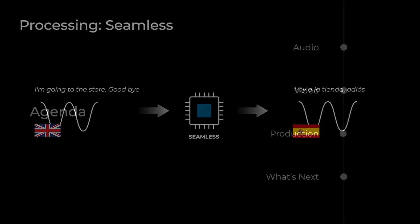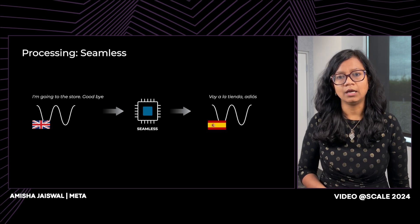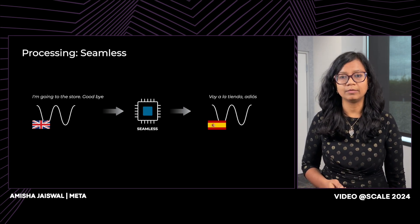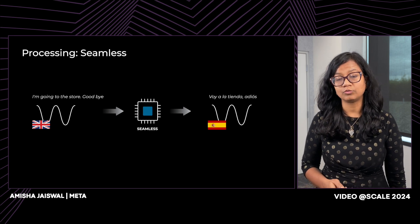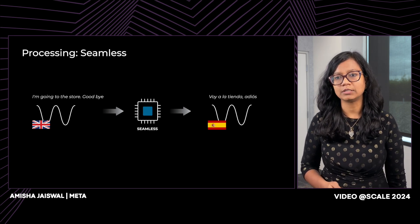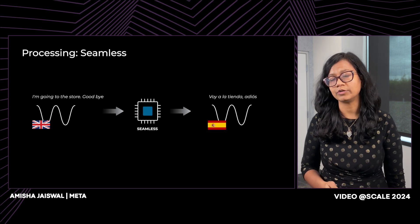Let's now look at the audio translation pipeline. The Seamless model sits at the core of our translation pipeline. Seamless model is a universal translator model — Meta released it last year. It currently supports six languages. It maintains prosody, emotions, and tone during translation to ensure the translated voice doesn't seem robotic, and it matches with the source voice.